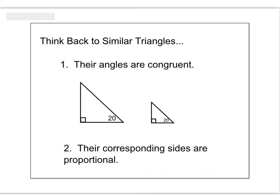Now think back to similar triangles. If two triangles have two congruent angles — like 20-degree angles and 90-degree angles — their third angles must be 70 degrees, since angles add up to 180. Those triangles are similar and proportional. We memorized ratios for 45-45-90 and 30-60-90, but imagine if we had to memorize 20-70-90, or 21-69-90, or 22-68-90, and so on. The good news is I'm not going to make you memorize all those different right triangle ratios.